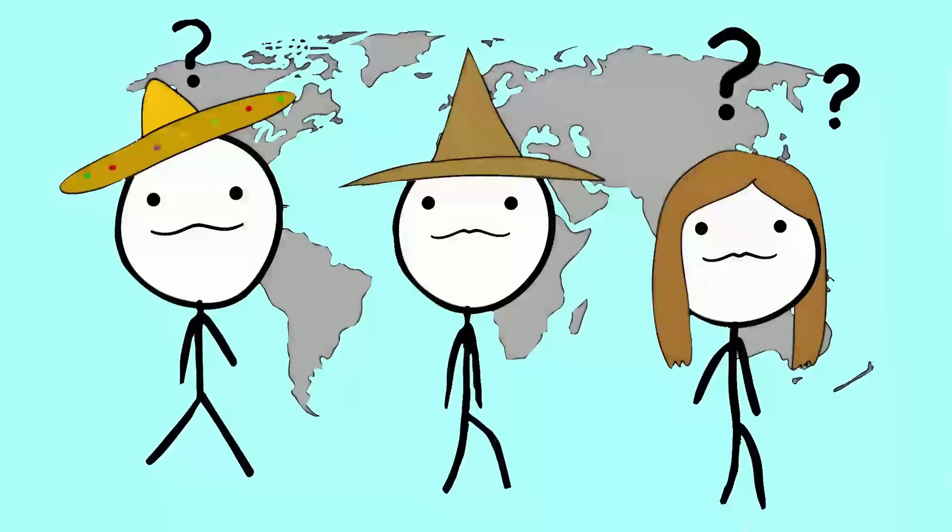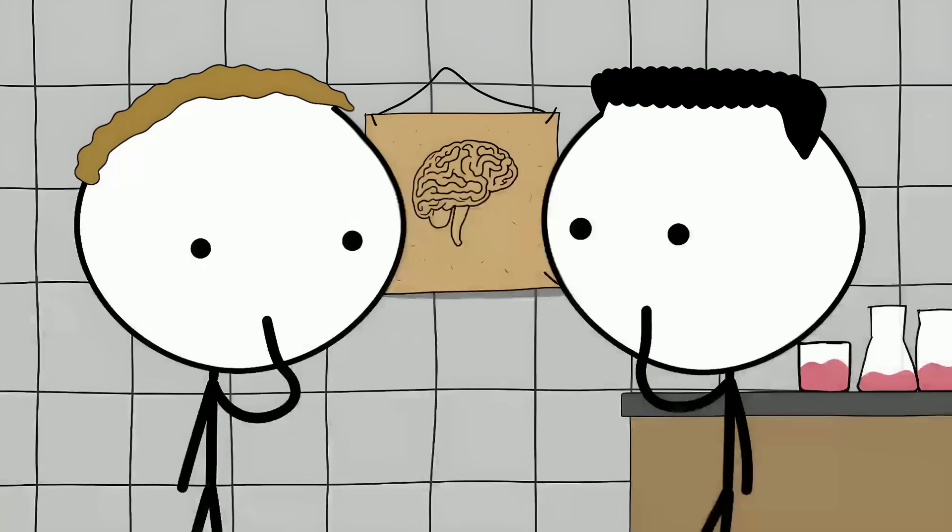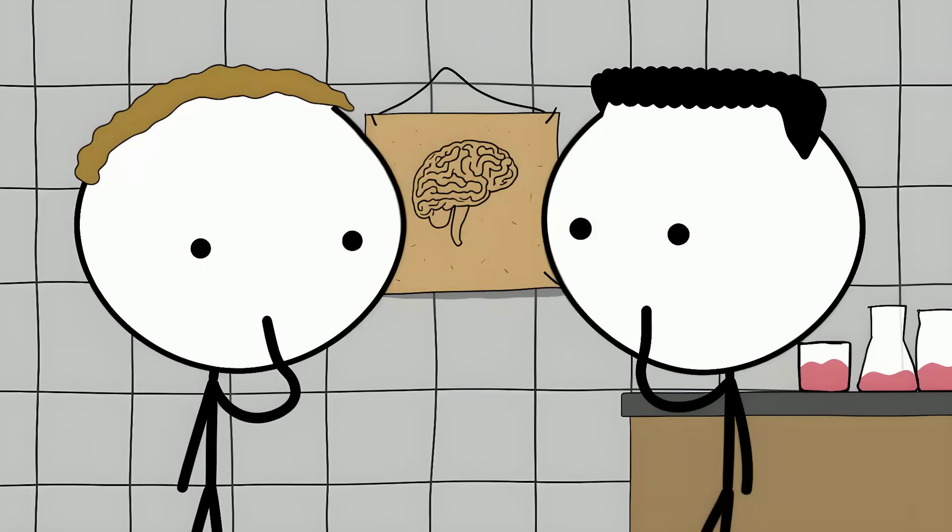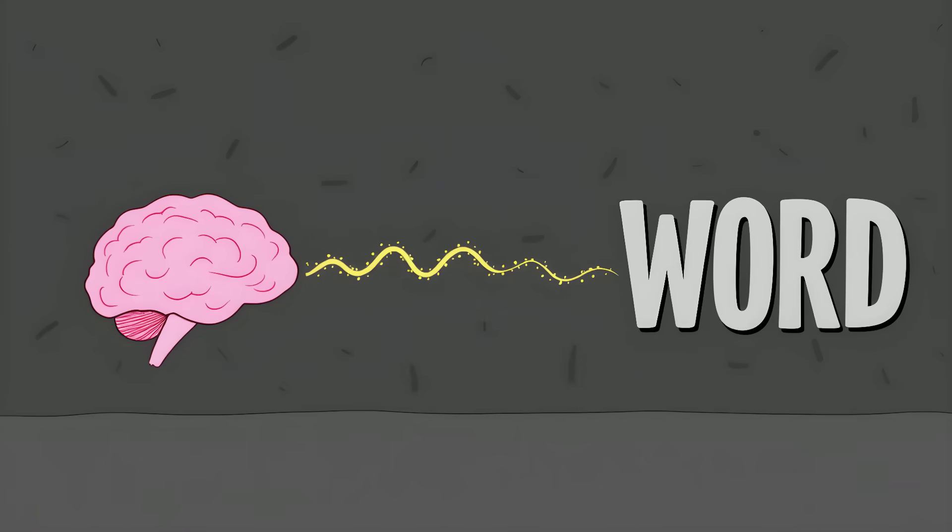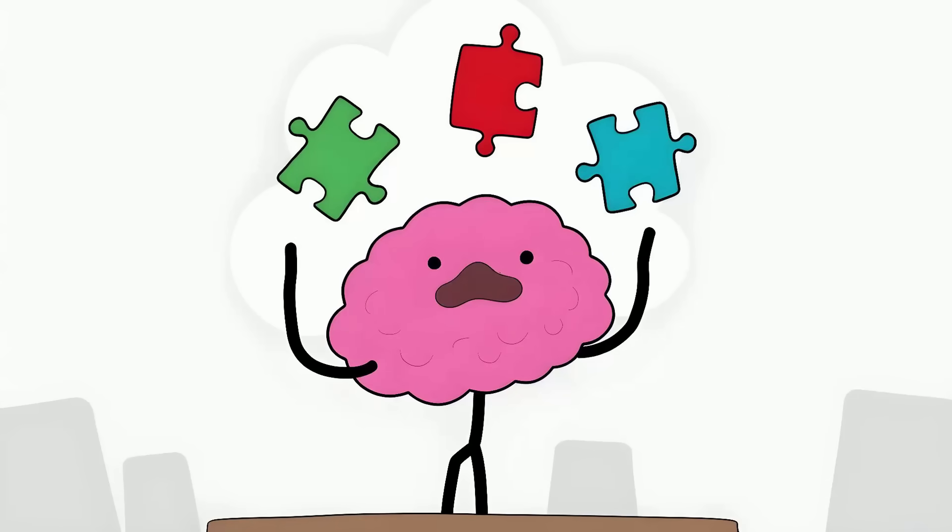This happens in every language and culture around the world. Even people who use sign language get it. Scientists have two main theories. The first says the word is there, but the signal to reach it is too weak. The second suggests your brain is making guesses based on fragments of information, like solving a puzzle with missing pieces.